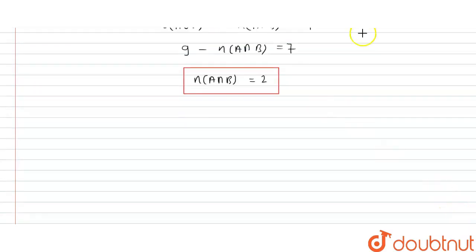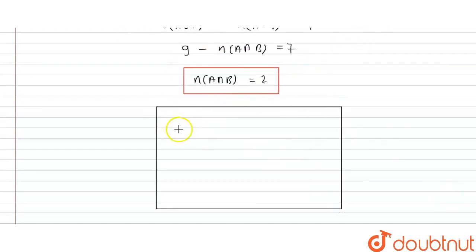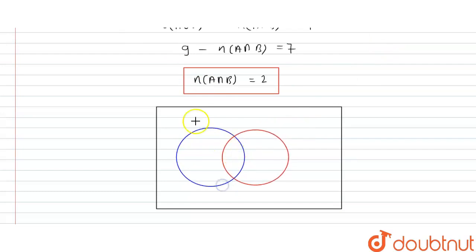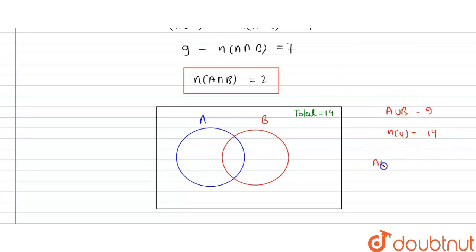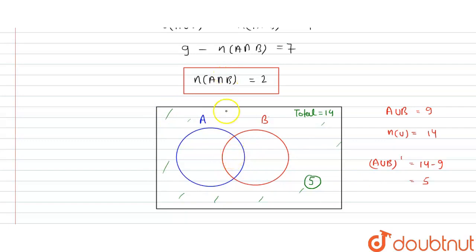Now we make a Venn diagram with two sets A and B. The total universal set is 14. We found that A union B equals 9 and the universal set is 14, so the complement of A union B equals 14 minus 9 equals 5. These 5 elements are outside both sets. The A intersection B value from Case 3 is 2.